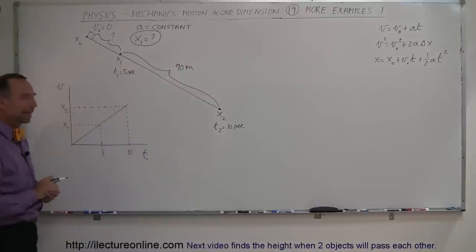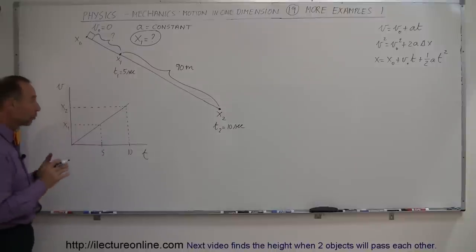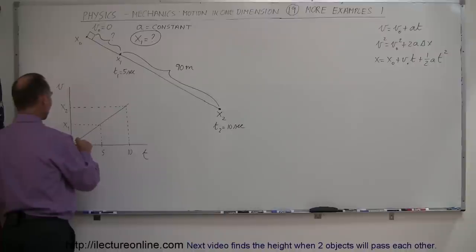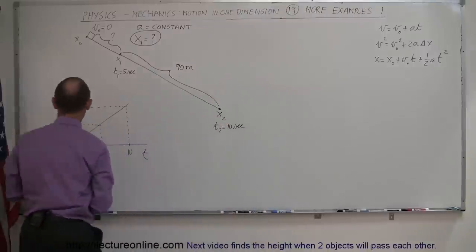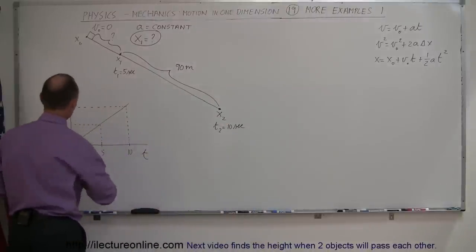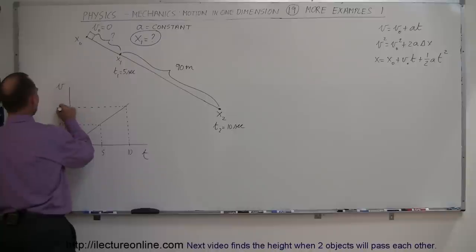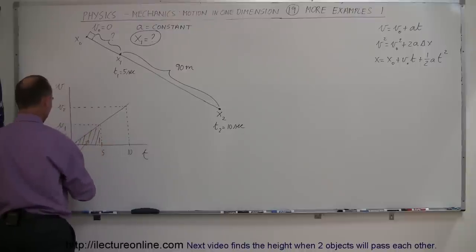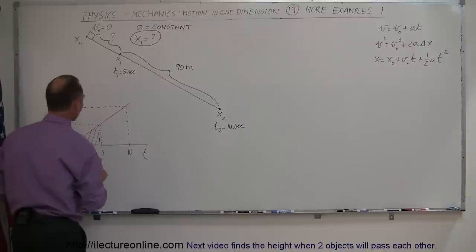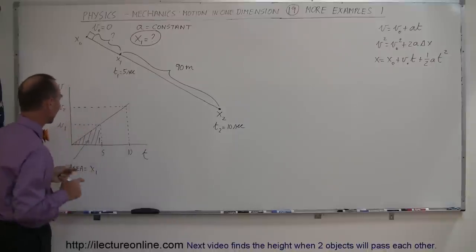Now, in a velocity versus time graph, what does the area represent? Of course, remember the area represents the distance traveled. So the distance traveled — it's not a distance label on the axis here, it is v1 and v2 (velocities at those times). The area underneath the curve — this area right here — represents x1, so the area equals the distance from x-sub-0 to x-sub-1.